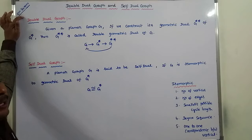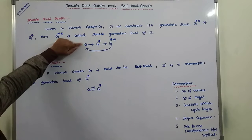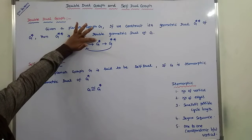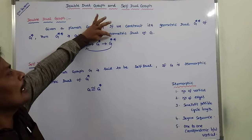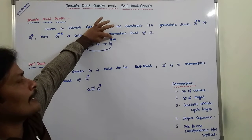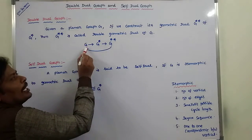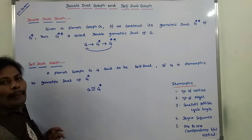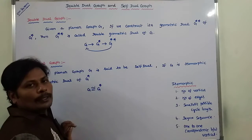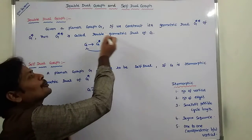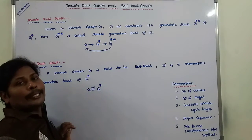The first concept is double dual graph. For a given graph G, first we have to draw the dual graph. After that, for this dual graph, again we have to find out the dual graph — this is called the double dual graph. For a given graph G, first we construct the dual planar graph, that is G star. Then for this dual planar graph, again we find the dual, which becomes G star star, the double dual graph.